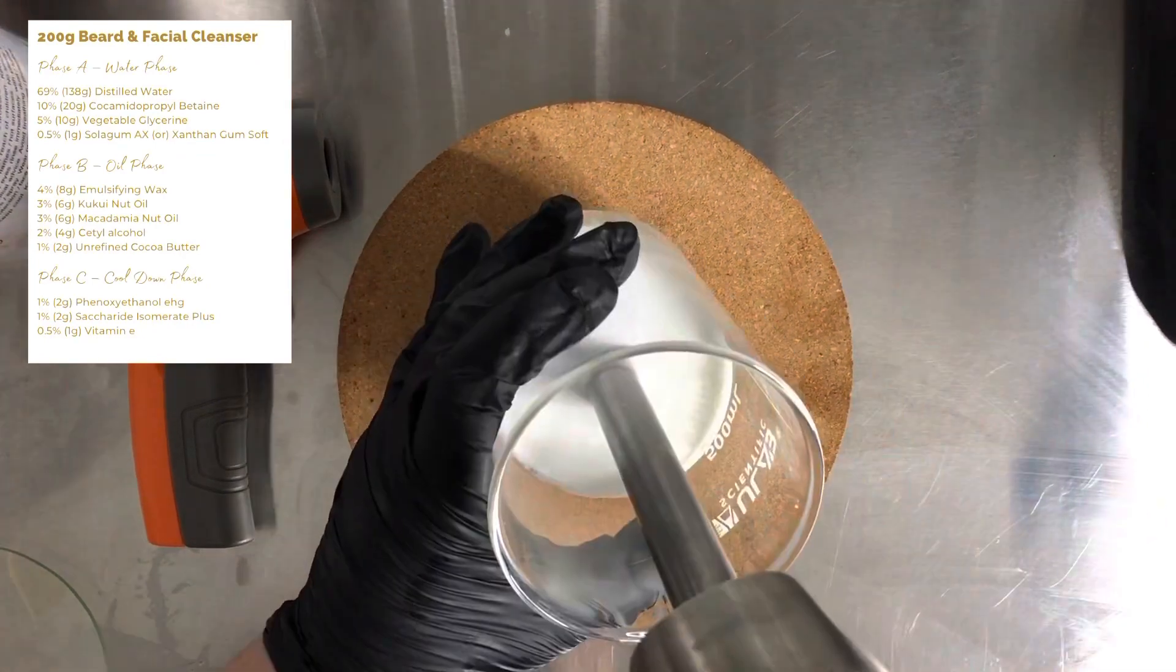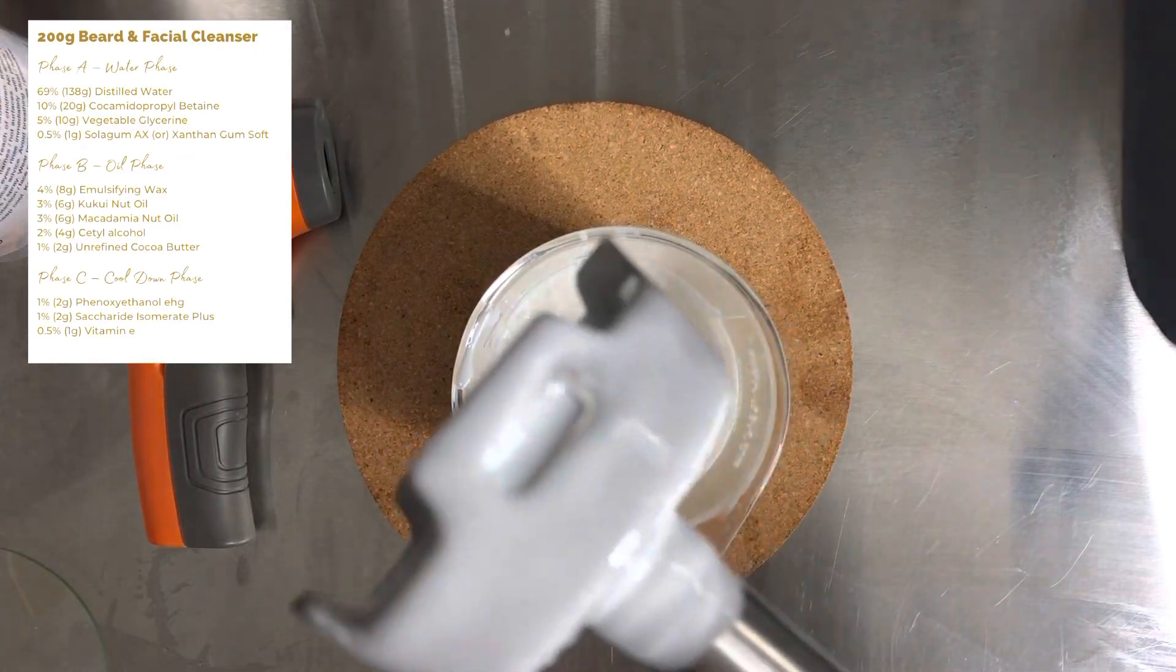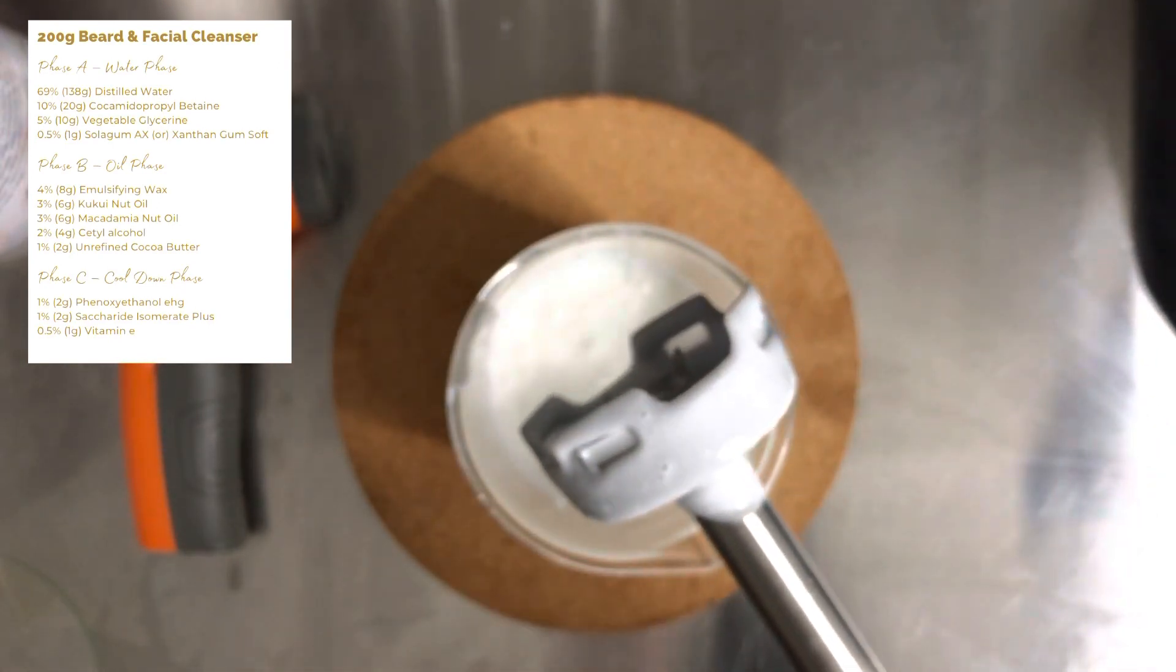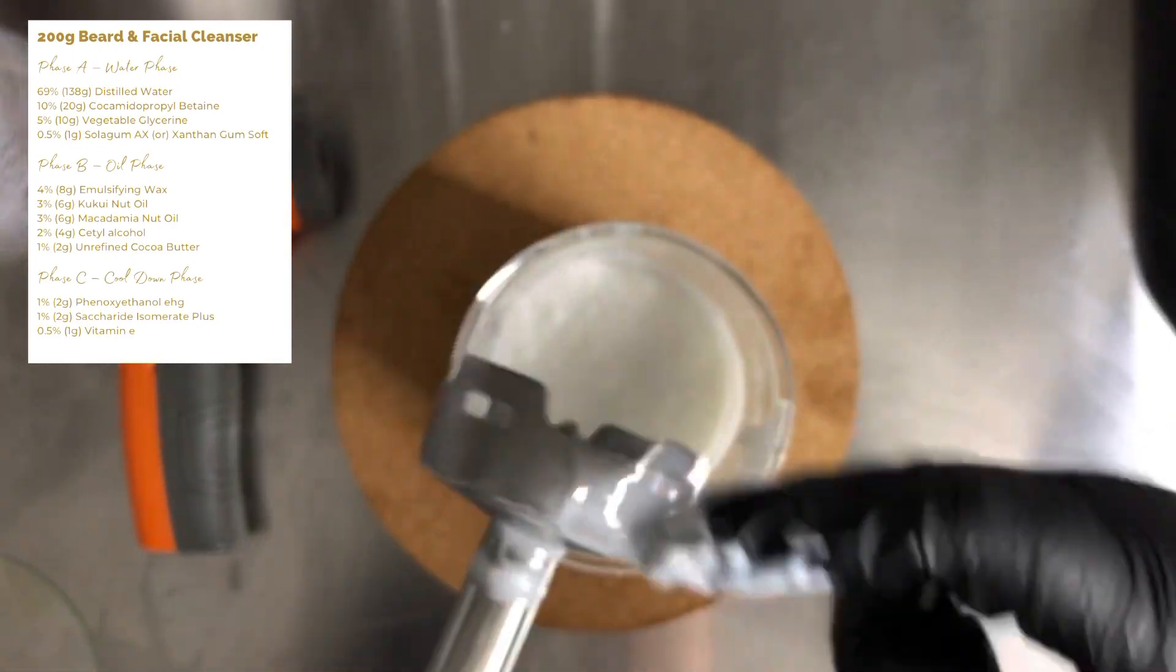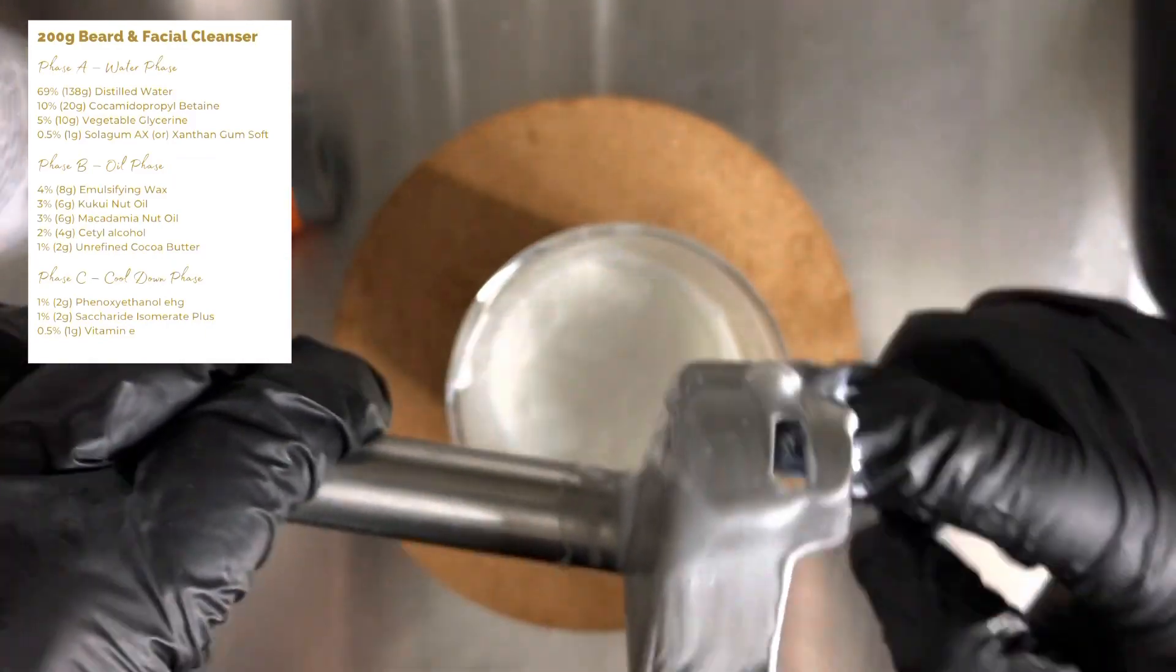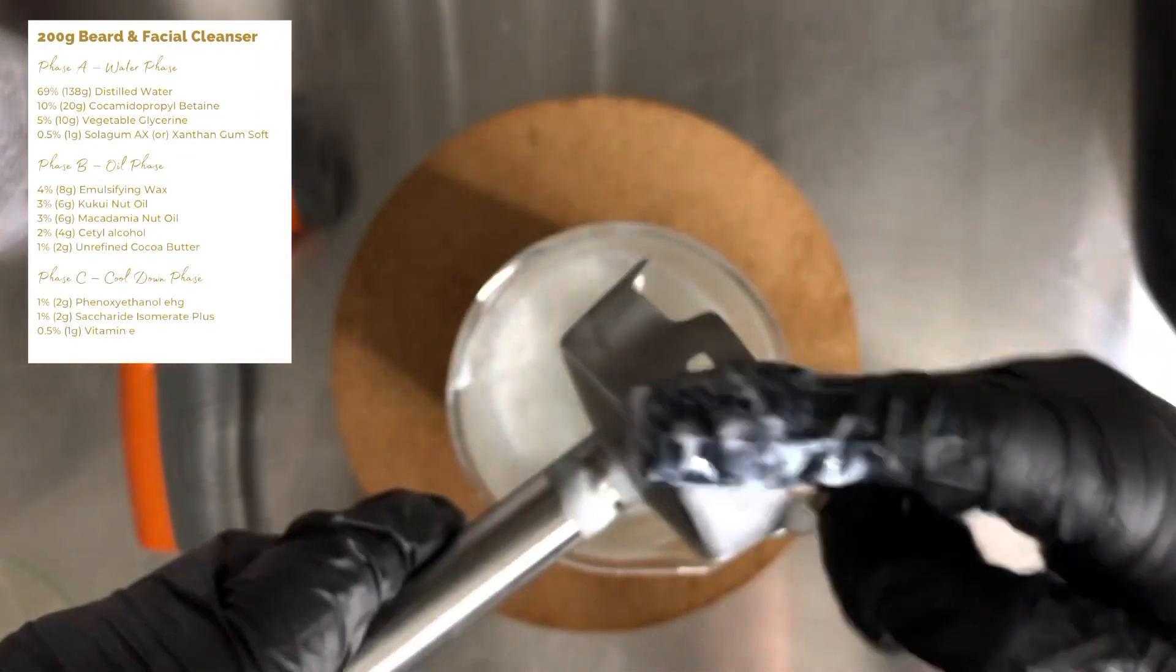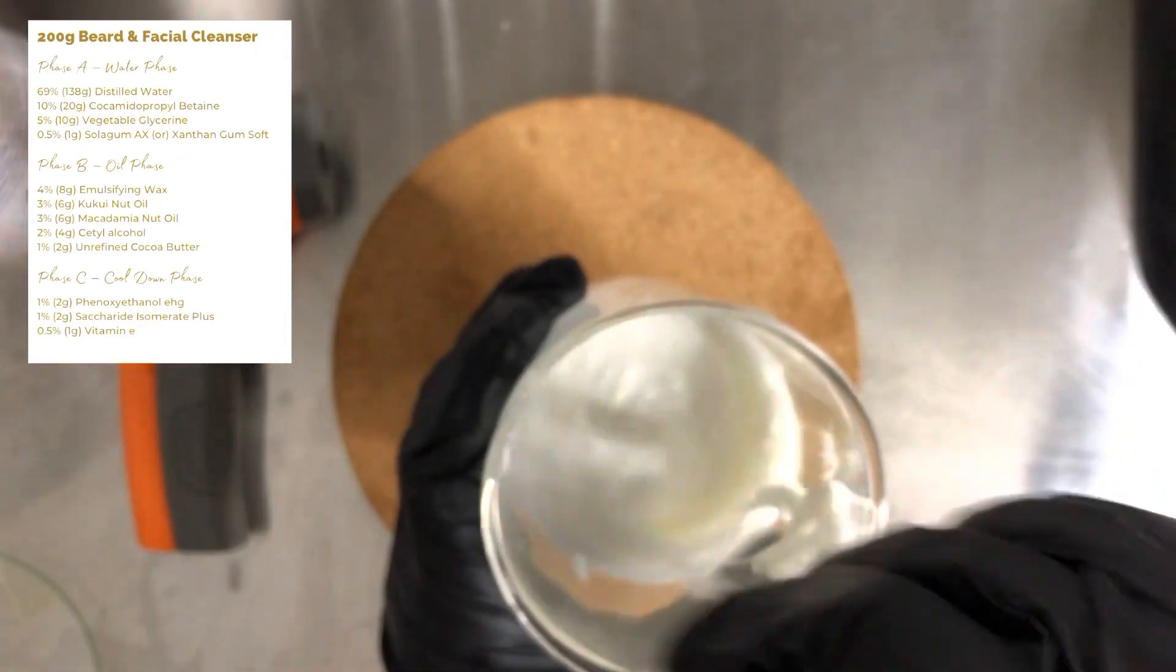You'll know you've hit emulsion when you can take the stick blender out and see the mix not separating on the end. And then all you need to do is just detach your shear mixer head from the mechanism. And then you can clean the head—obviously never, ever, ever do this when it's still plugged in and attached because you will lose a finger and you don't want to do that. So clean off the head of that, and then you can leave this to cool down because we need to leave it to cool to 40 degrees Celsius as usual before we add our cool-down phase ingredients.